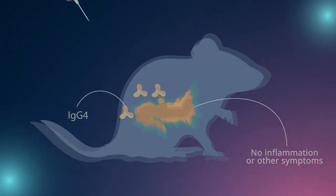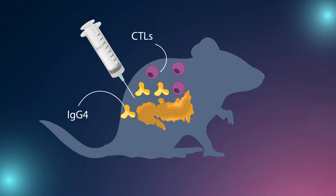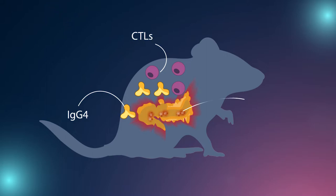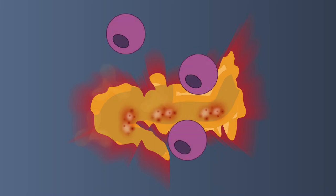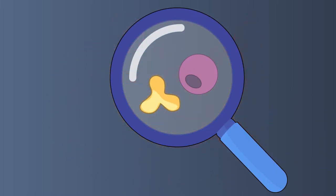Next, they injected both ovalbumin-specific IgG4 as well as CTLs into the mice. Now the pancreas of the mice showed tissue damage and inflammation, indicating that the combination of CTLs and IgG4 was necessary for pancreatic inflammation.